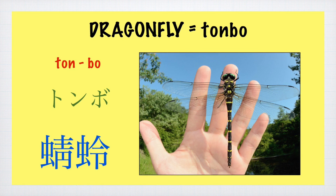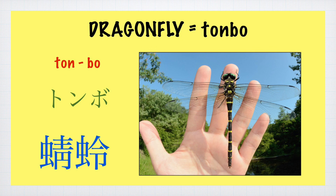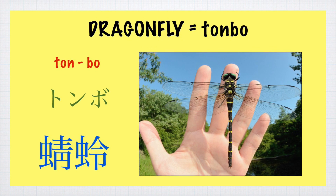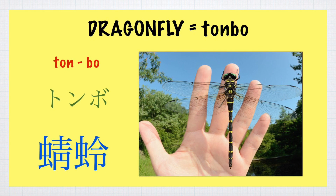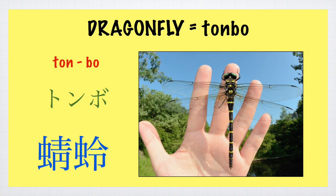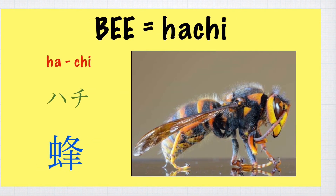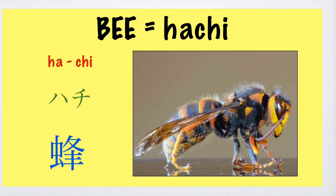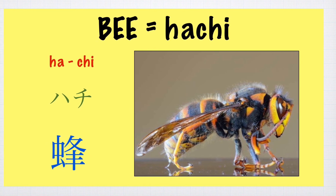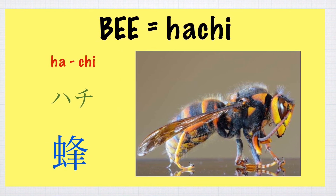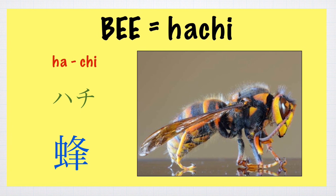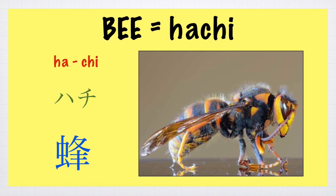Note that the N syllable is pronounced as M because of assimilation. This happens when the N syllable is followed by the B sound or the P sound. Bee — Hachi.